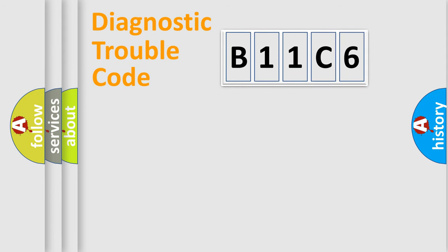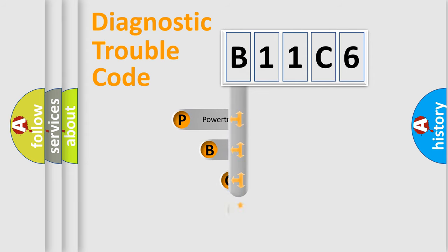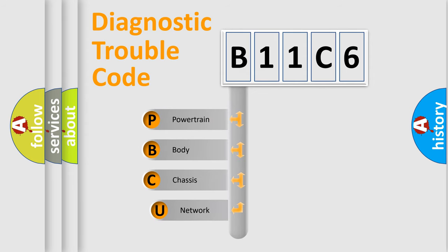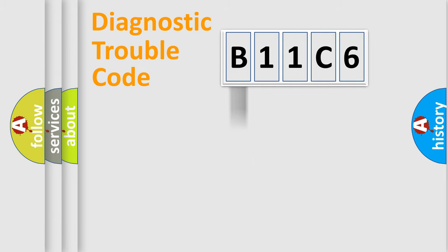Let's do this. First, let's look at the history of diagnostic fault code composition according to the OBD2 protocol, which is unified for all automakers since 2000. We divide the electric system of an automobile into four basic units: powertrain, body, chassis, and network.